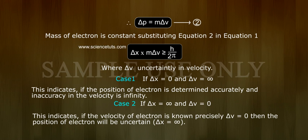Where Δv = uncertainty in velocity. Case 1: If Δx = 0 and Δv = ∞, this indicates if the position of electron is determined accurately, the inaccuracy in the velocity is infinity.